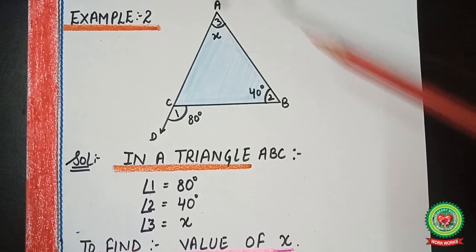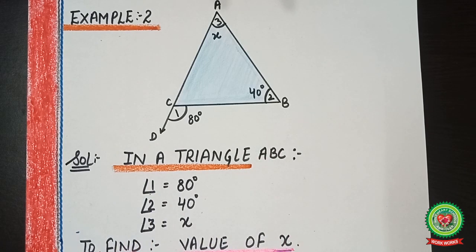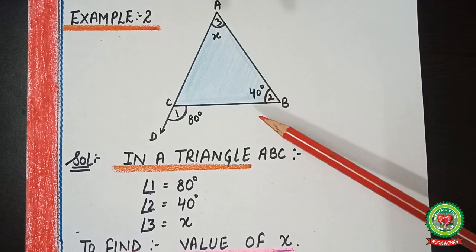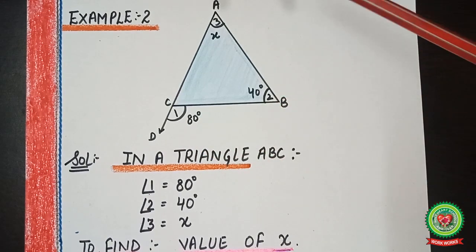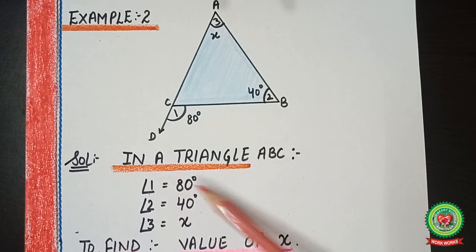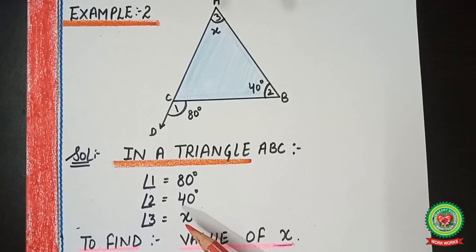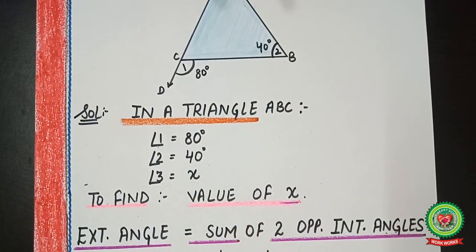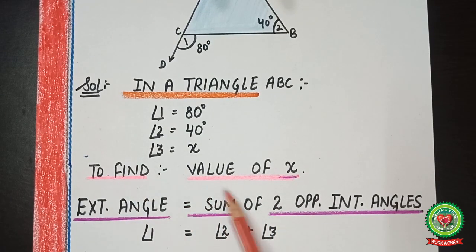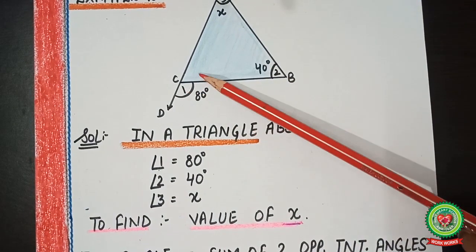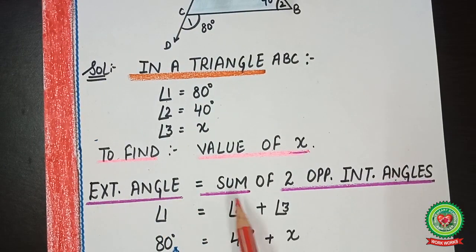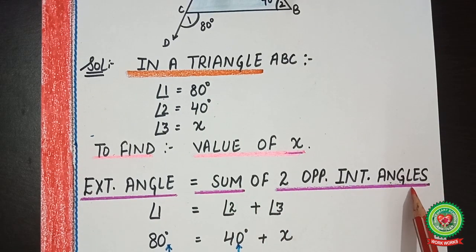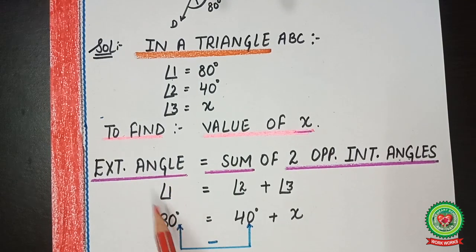First, give the numbering to the figure: angle one is 80 degrees, angle two is 40 degrees, angle three is X. In triangle ABC, angle one equals 80 degrees, angle two equals 40 degrees, and angle three equals X. We need to find the value of X. Since we have an exterior angle, we apply the exterior angle property: exterior angle equals sum of two opposite interior angles. The exterior angle is angle one.